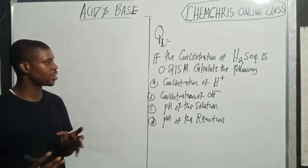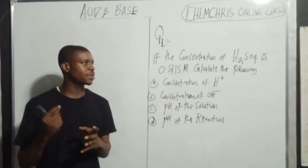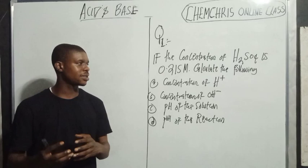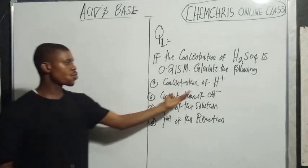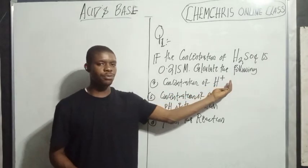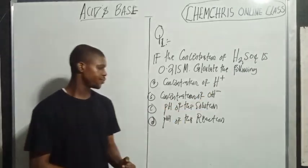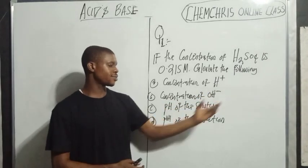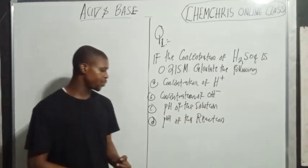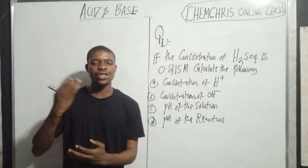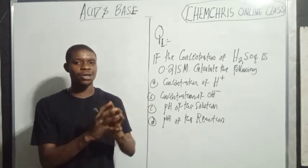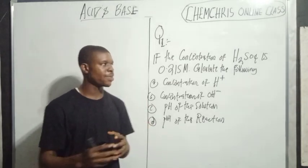If you look at the question on the board, it says that if the concentration of H₂SO₄ is 0.215 molarity, calculate the following: concentration of H⁺ (hydrogen ion / proton), concentration of OH⁻, pH of the solution, and pOH of the solution. So how do you solve this problem? I'm going to give you a rough background on how you can actually tackle this.